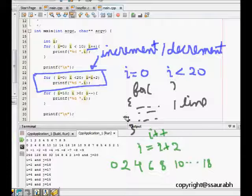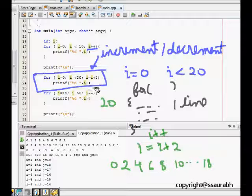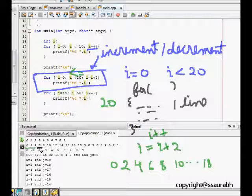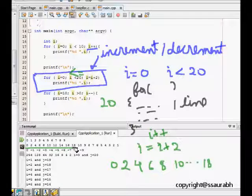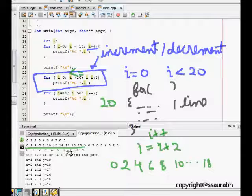Now i is equal to i plus 2, so i becomes 20. It will not be printed because it goes out of the loop. But if we wanted to print 20 also, we should have given here less than equal to sign. This is what we see also 0, 2, 4, 6, 8, 10, 12, 14, 16, 18 and after that we break. Because I have not given a printf slash n, it goes into the next for loop output.